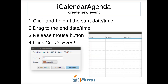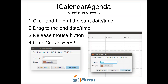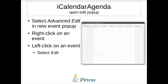Now I'll talk about how to create a new event. There are four steps: first, click on the agenda at the date and time to start the event; then drag the mouse to the end date and time and release the mouse button. A dialog appears that allows the summary and category to be changed. Clicking create event saves the event. There is also an edit pop-up for more advanced editing, which can be opened by selecting edit in the new event dialog, right-clicking on a recurrence, or left-clicking a recurrence and selecting edit.